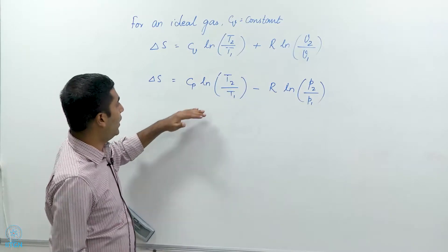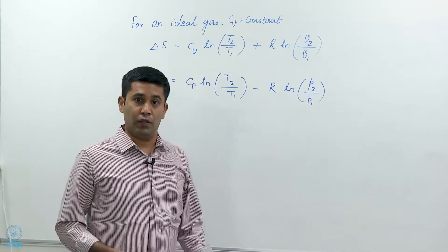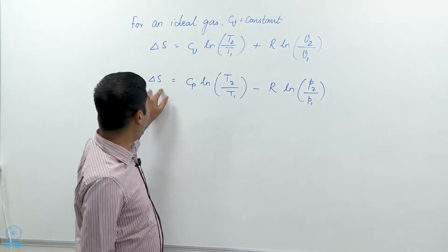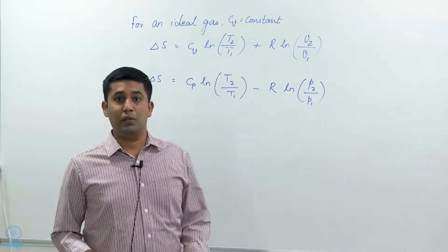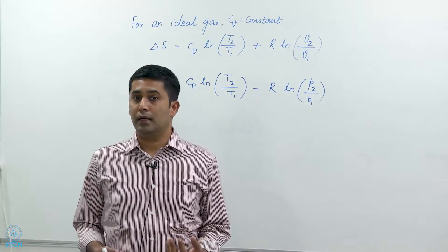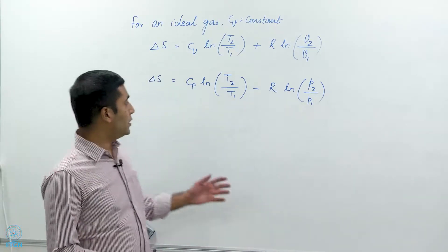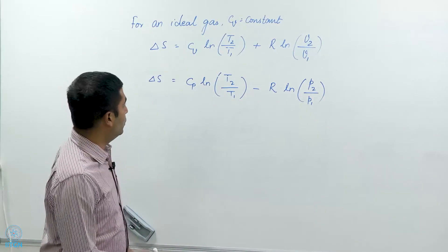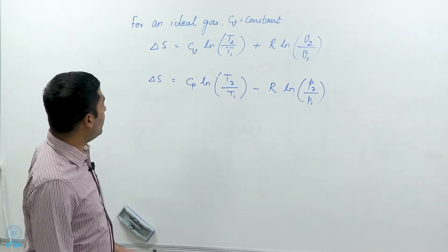Similarly, if I hold the temperature constant — that is, an isothermal process — then the temperature term drops out and we observe that entropy decreases as pressure increases. So when I pressurize an ideal gas at constant temperature, I am decreasing its entropy. If there is a change in temperature, then I need to evaluate the entire expression.